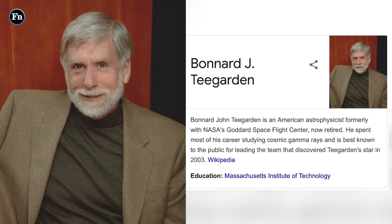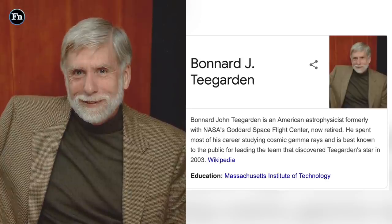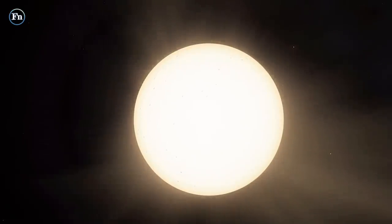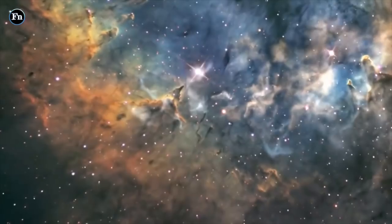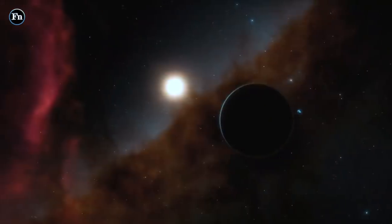In 2003, scientist Bonnard Teegarden led a team that found what is now known as Teegarden star, a red M dwarf star about 12.5 light-years away. Since that time, astrophysicists have studied both the star and the planets that make up its star system.